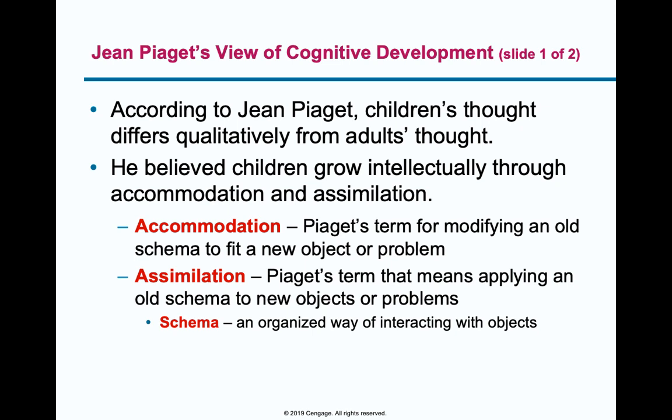Jean Piaget's view of cognitive and intellectual development looks at growth through stages — this is his stage theory. Children grow intellectually through these periods as they learn and categorize information into schemas. Schemas are categories of knowledge in your brain — you have a schema for dogs, for famous baseball players, for cities. He also has the concepts of accommodation and assimilation: accommodation is fitting a new thing into an existing category, and assimilation is applying new objects to old schemas.